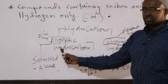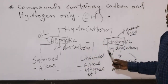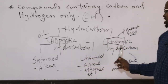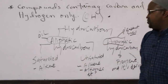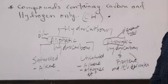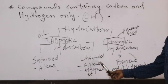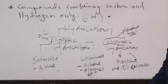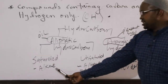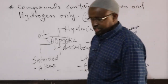So hydrocarbons can be subdivided into aliphatic and aromatic. Aliphatic hydrocarbons may be saturated like alkanes or unsaturated like alkenes and alkynes. We will go on and explore these further.